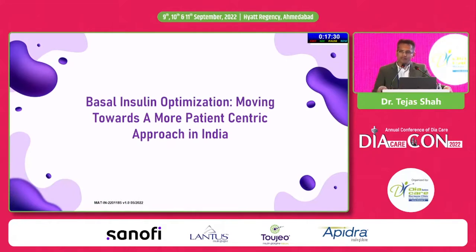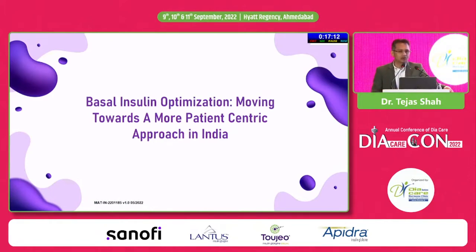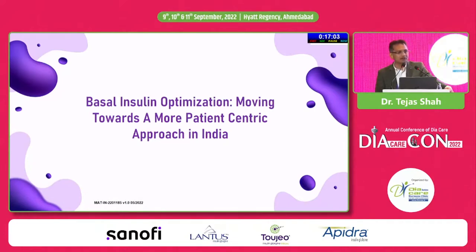We know that type 2 diabetes is a progressive disease, and over a period of time patients starting off with lifestyle and oral medications ultimately reach a stage where they require insulin. The average HbA1c at the time of initiation of insulin in our country is somewhere around 9 or 9.5, and the average duration after a patient starts insulin is more than 7 years remaining uncontrolled on 2 or 3 drugs.